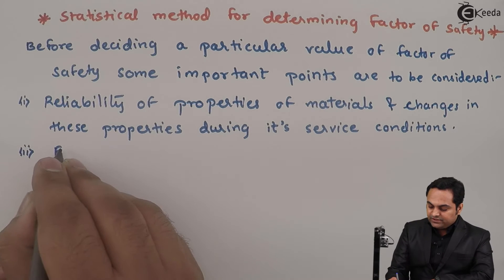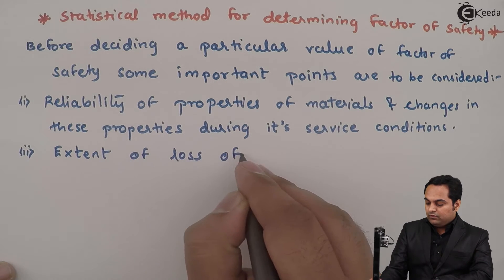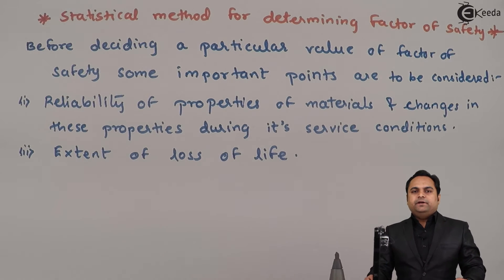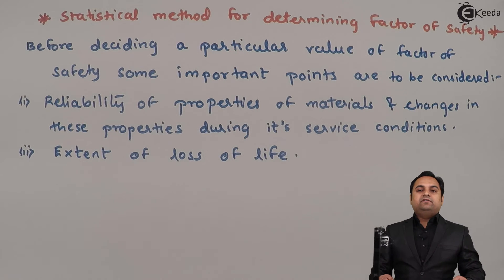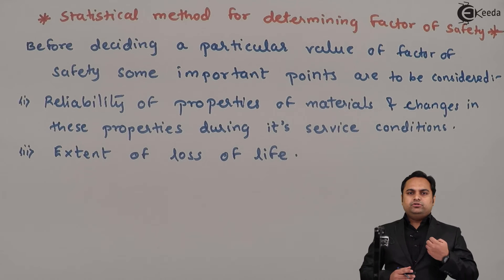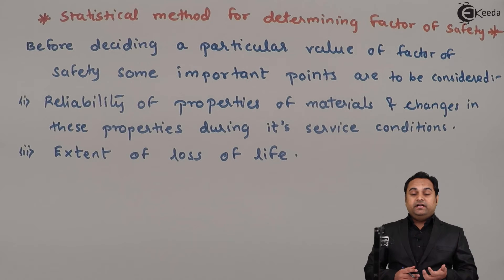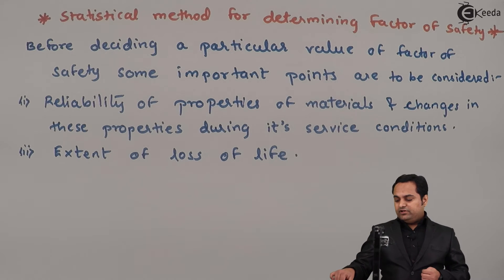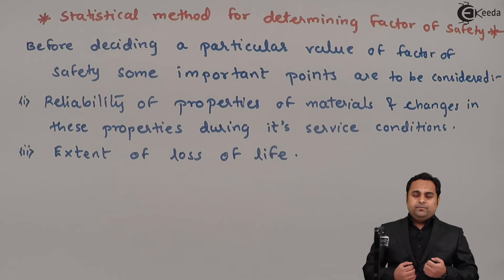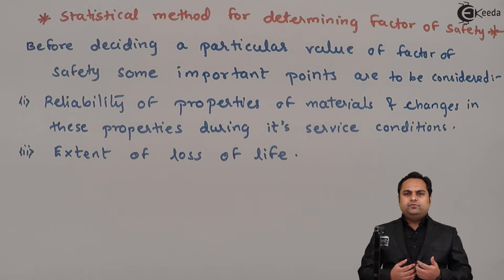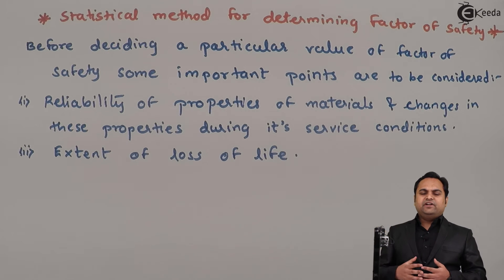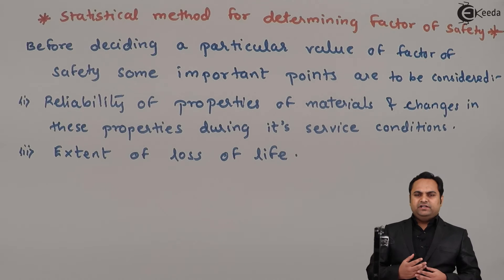The next important point is the extent of loss of life. When designing any component, we must decide whether it is harmful to human beings or not. For example, when designing trains or aircraft, the factor of safety considered is high because the chances of loss of human life are greater in such applications, so we must choose a high factor of safety.